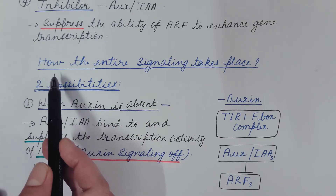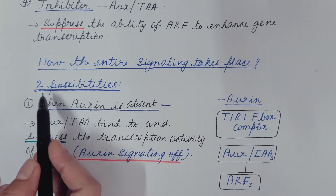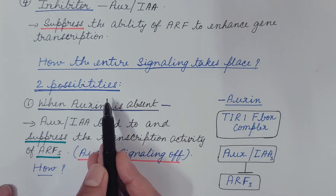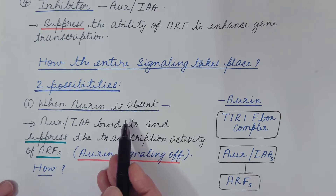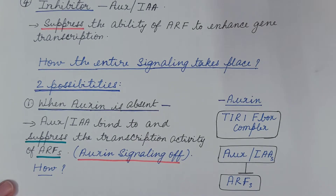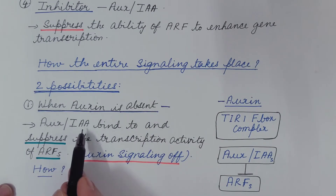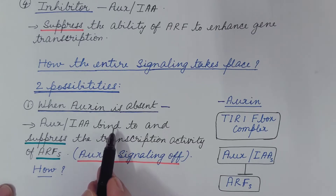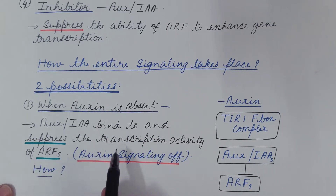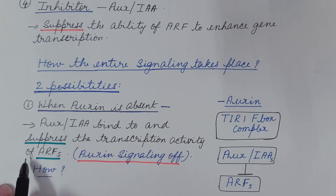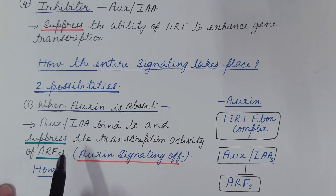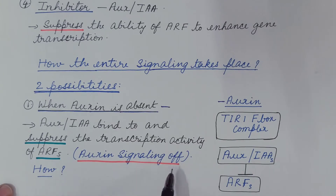Now let us see how the entire signaling takes place. There are two situations: first when auxin is absent, and second when auxin is present. When auxin is absent, AUX/IAA — the inhibitor — binds to and suppresses the transcription activity of ARFs, which are the transcription factors. As a result, transcription is suppressed and auxin signaling is off.